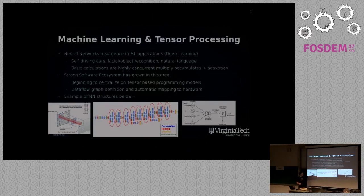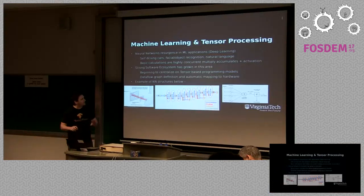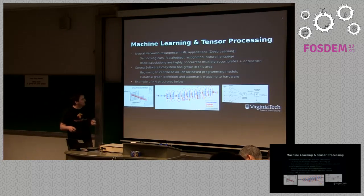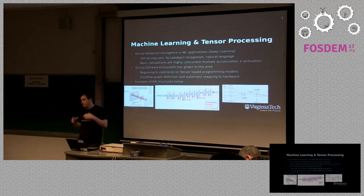If you look at some of the bigger models — this is from about a year and a half ago, one of Google's vision networks for object recognition — that transfer function for a layer is just one box in a network that's now 40 or 50 layers deep, and some this year were over 100 layers deep. There's been a really strong software ecosystem to support this, and it's centralizing around a tensor programming model where you build big tensor graph expressions as an abstract data flow representation and then map it down to hardware.